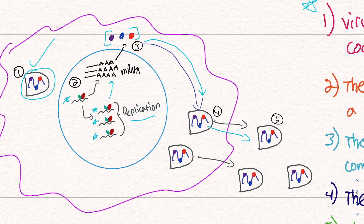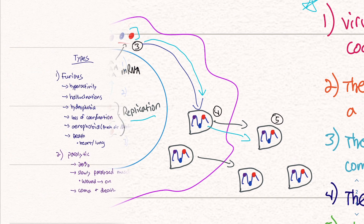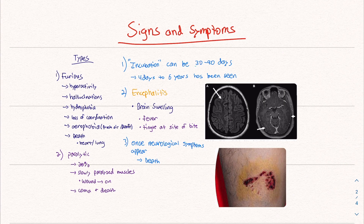The goal is to get into the cell, copy the genetic material, turn that material into the pieces of the virus, assemble those pieces, and then spread the virus to the rest of the host. Once the virus infects the host, it takes about 30 to 90 days to show signs and symptoms — that's called the incubation period. It's been seen as short as four days to as long as six years, but on average 30 to 90 days. It causes encephalitis.